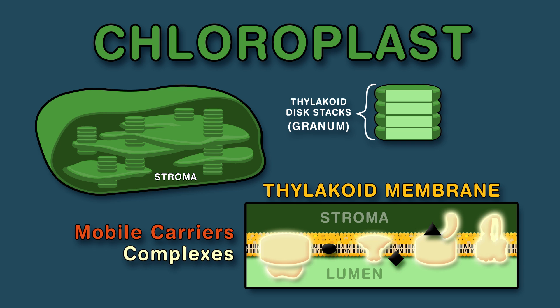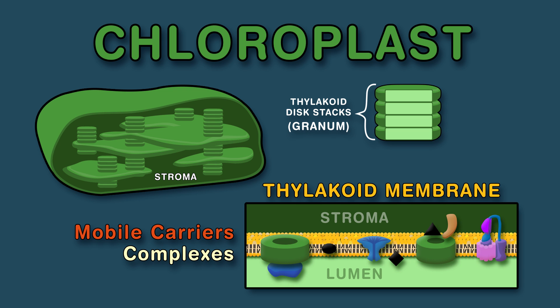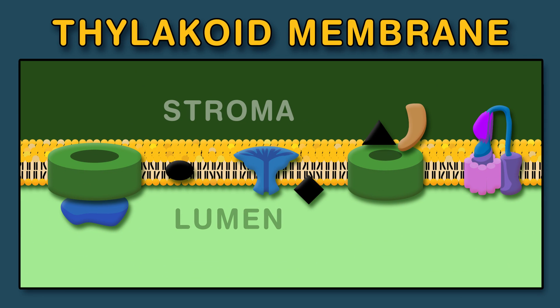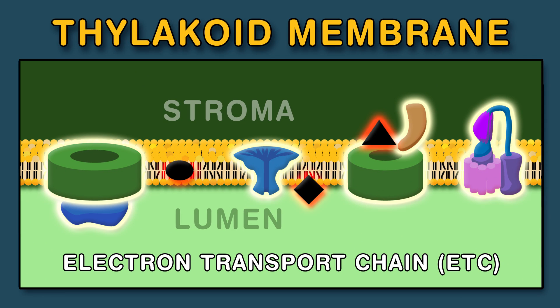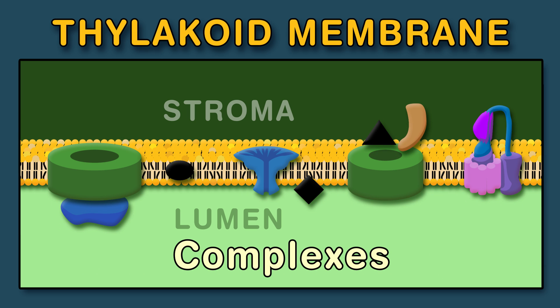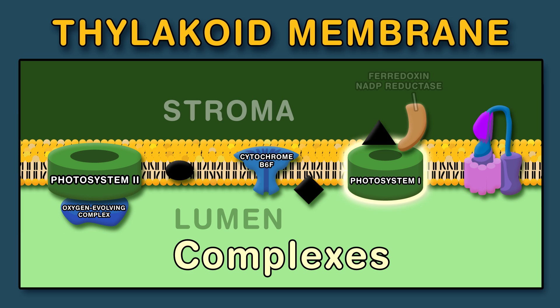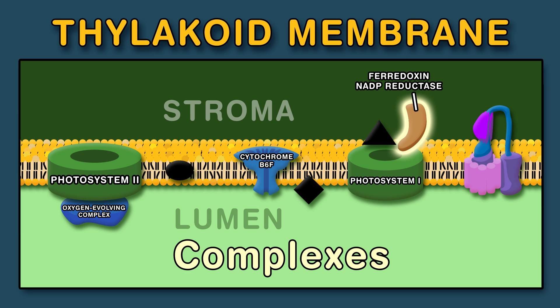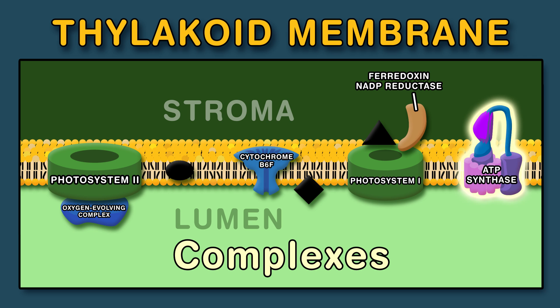The thylakoid is where you'll find the electron transport chain. The complexes on the thylakoid membrane are: Photosystem II, oxygen evolving complex, Cytochrome B6F, Photosystem I, Ferredoxin NADP reductase, and ATP synthase.